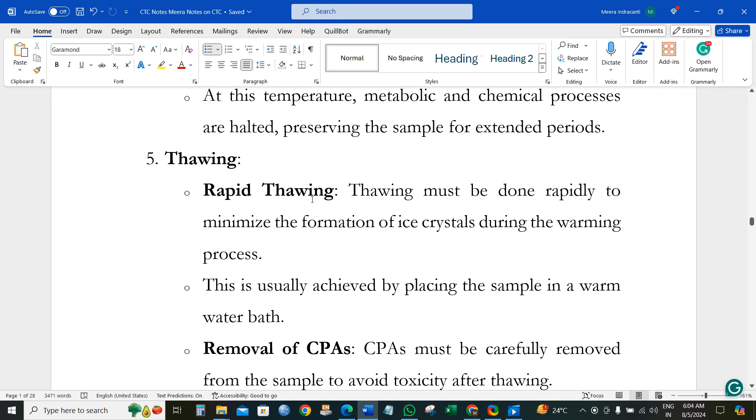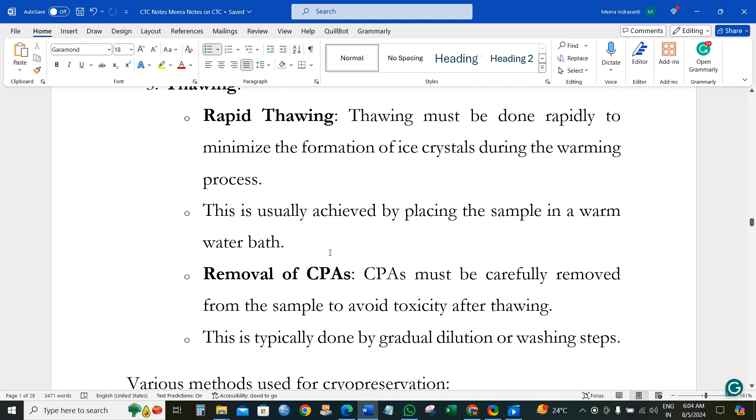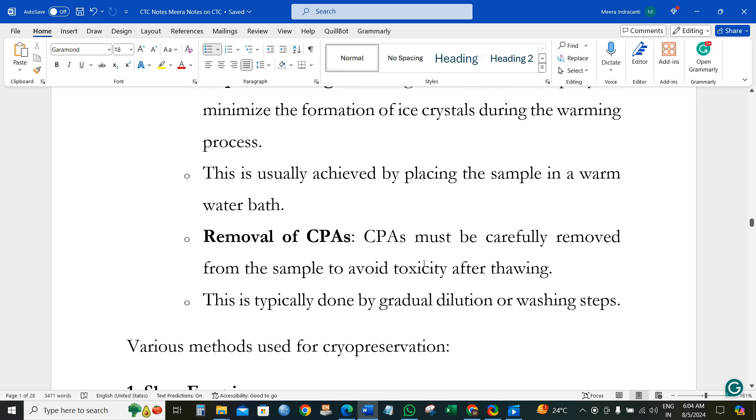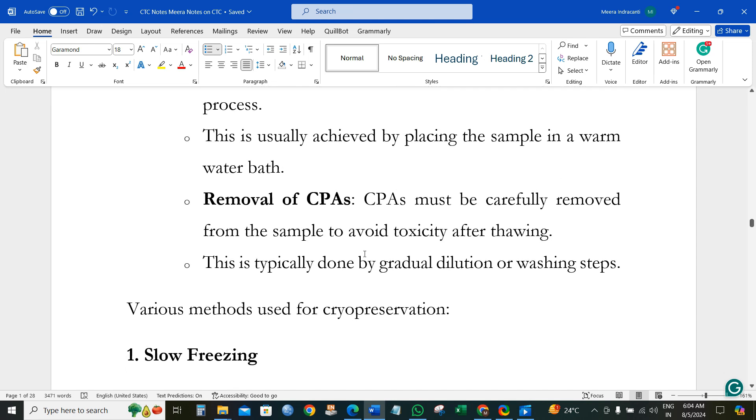We rapidly bring the sample to room temperature. Rapid thawing is mostly done to minimize crystal formation during the warming process, from minus 196 to room temperature. We use a warm water bath to maintain the required temperature. After bringing to room temperature, we remove the cryopreservative agents so the cells will not be toxic, and we can use the cells for normal processes.